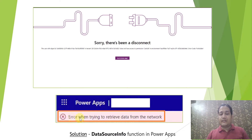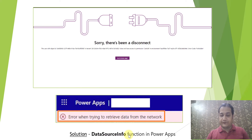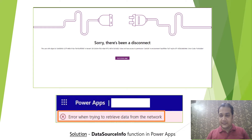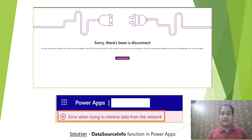To overcome these errors, there is a particular function called DataSourceInfo which is available in PowerApps. We can use it to show a graceful message and to check whether the current logged-in user has sufficient privileges or permission on your data source — in this case a Dataverse table. So let's see this in action.